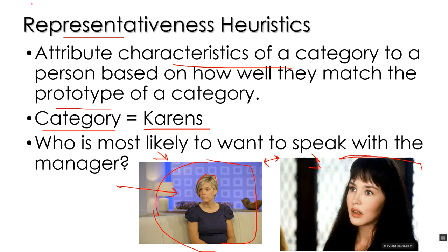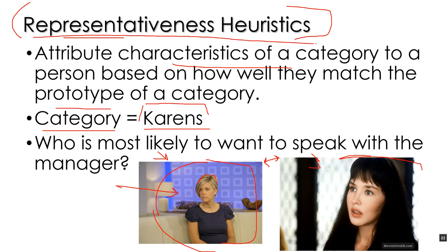What the representativeness heuristic is saying is something pretty powerful. Karen is a negative sexist stereotype — but what if we talk about racial stereotypes? What we're talking about with the representativeness heuristic is pure and simple racism or racial stereotyping. If I see a black person and I'm working based on the representativeness heuristic, and they match the prototype, I'm going to attribute all of the characteristics in that schema to that person. And what that is, is racism.